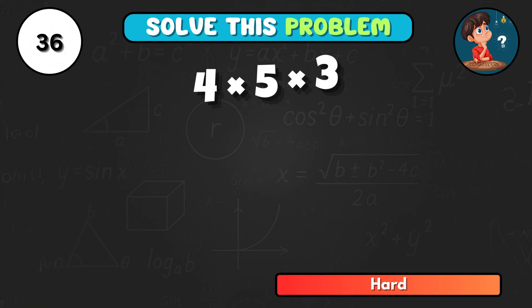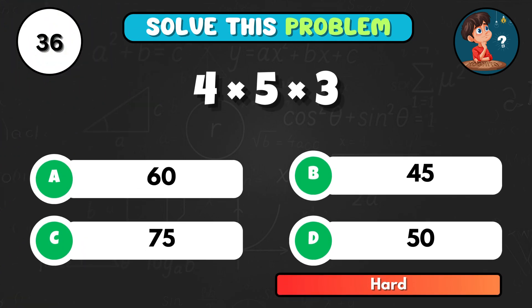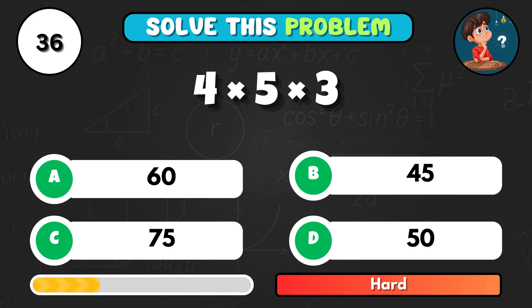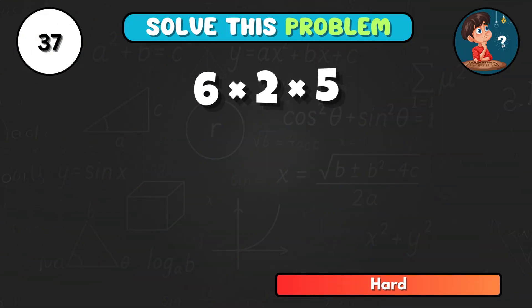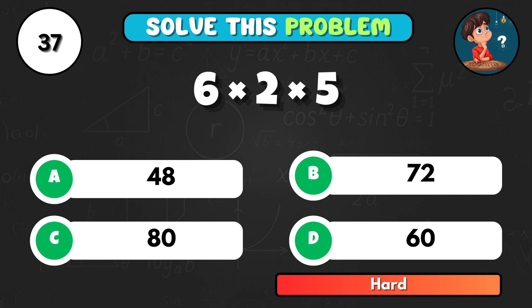3 numbers. 4 times 5 times 3. What's your answer? It comes to A, 60. Speed test. 6 times 2 times 5 equals... That's D, 60.